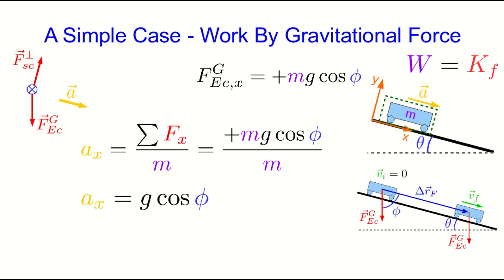The acceleration in the x direction is just all the forces in the x direction over the inertia, which is just that component of the gravitational force. So the acceleration in the x direction is g cos phi, and that's the whole acceleration.